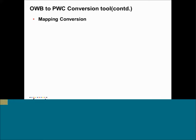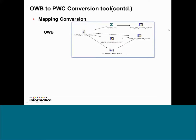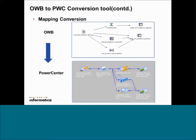Let's look at an example of how an OWP mapping gets converted to a PowerCenter mapping. Here is the OWP mapping, which has got a flat file, aggregator, expression, and two different targets getting loaded. Now you'll see the PowerCenter mapping, which has got all the same objects — flat file, aggregator, expression, lookup, and two different targets — and it has all the fields and transformation properties, such as the lookup condition and the code used for the aggregator group, etc., in the converted PowerCenter mapping.